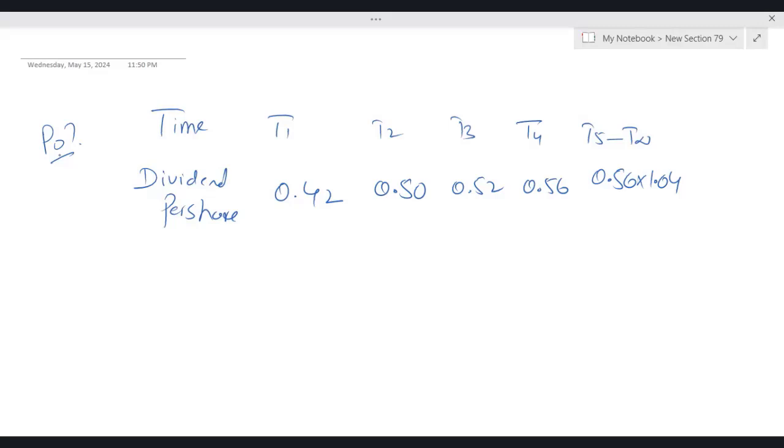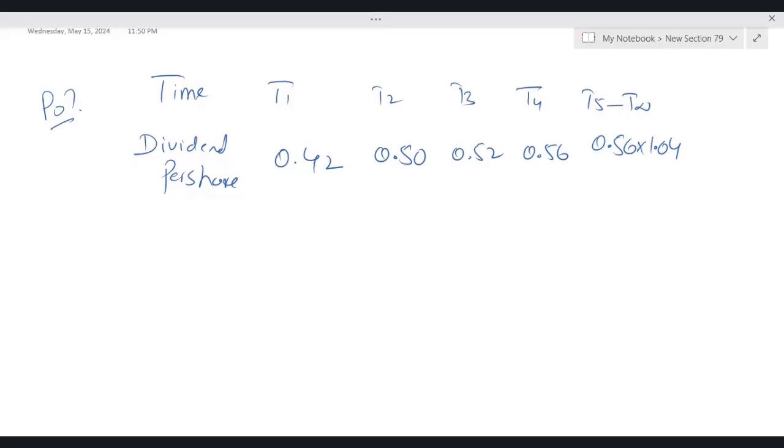Since we have been given dividend per share, the final value is going to be P0, the current share price. To discount the dividends, we need to use discount vector ke, assuming ke is 10 percent.